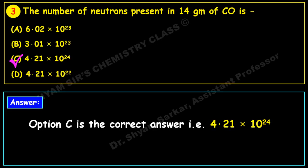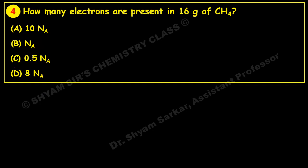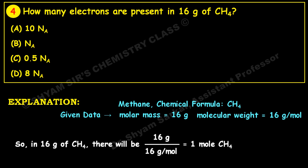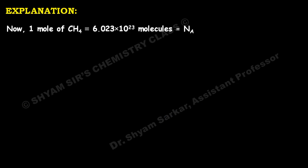Next question: how many electrons are present in 16 grams of methane? Answers are given in multiples of Avogadro's number. Given data: methane, chemical formula CH₄, molar mass 16 grams, molecular weight 16 g/mol. Number of moles = 16 ÷ 16 = 1 mole of CH₄, which contains Avogadro's number of methane molecules.